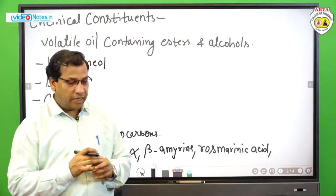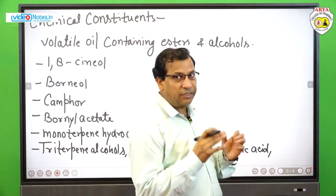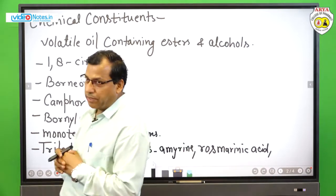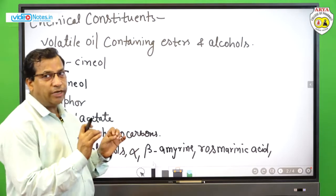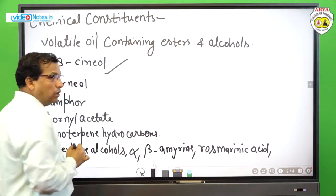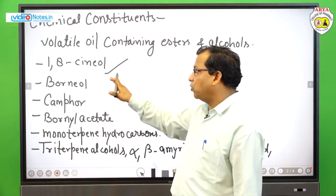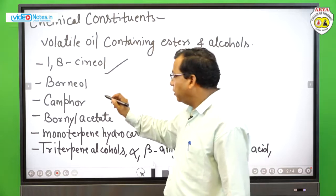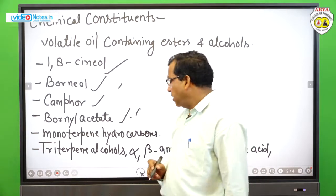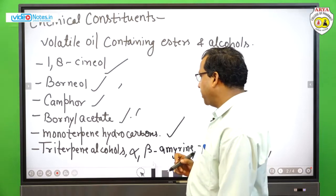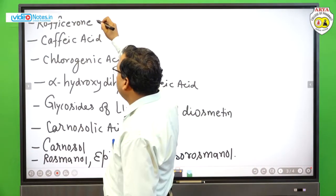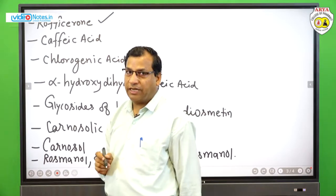Now we will discuss the chemical constituents present in rosemary oil and the rosemary herb. Volatile oil containing esters and alcohols are present. The main constituents are 1,8-cineol (present in highest amount), borneol, camphor, borneol acetate, monoterpenes, hydrocarbons, triterpenes, alcohols, alpha and beta amyrin, rosmarinic acid, and rosmaricinol in small amounts.